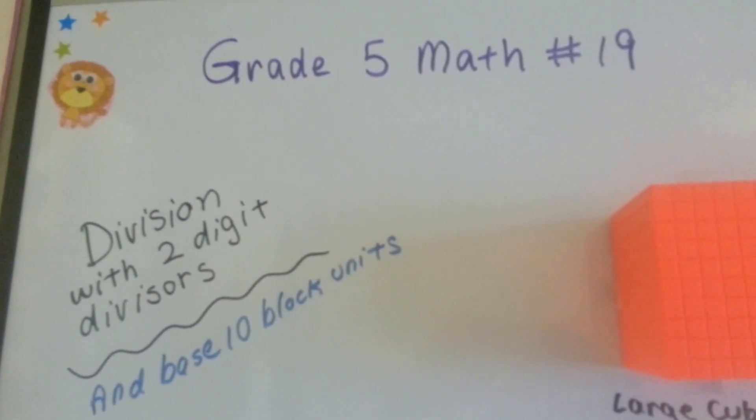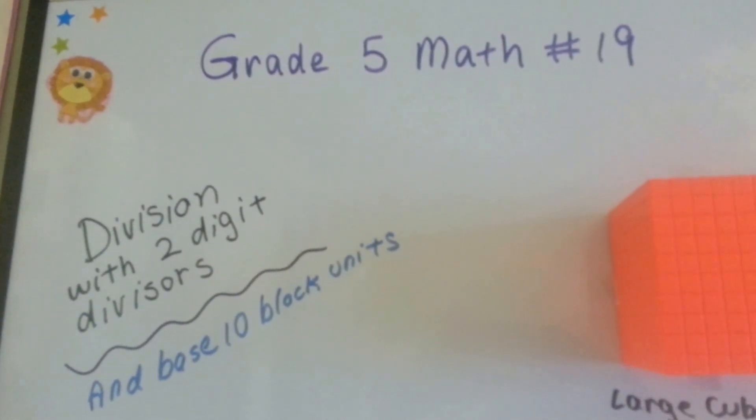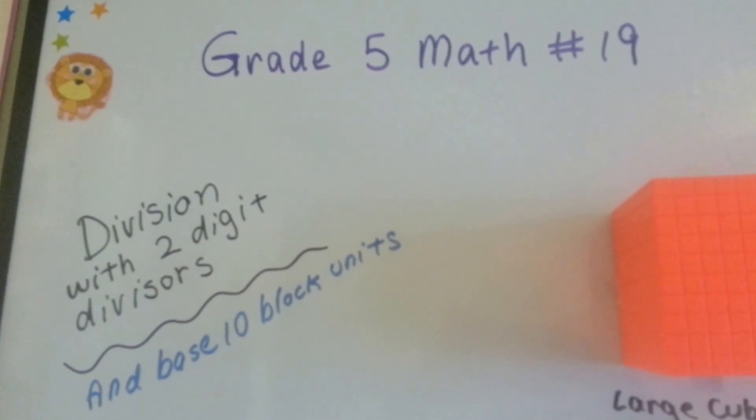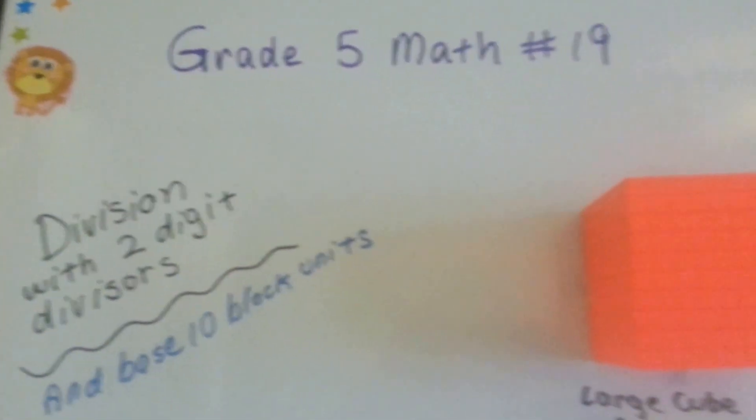Grade 5 math, number 19: division with two-digit divisors and base 10 block units.